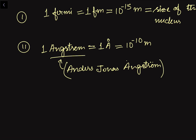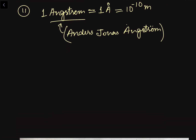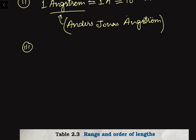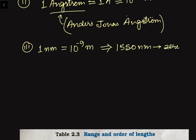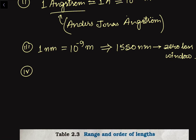The third unit is the nanometer (nm). One nanometer is equal to 10 to the power minus 9 meter. This unit is used to measure wavelengths of light. For example, in optical communication the zero-loss communication window is at 1550 nanometers.